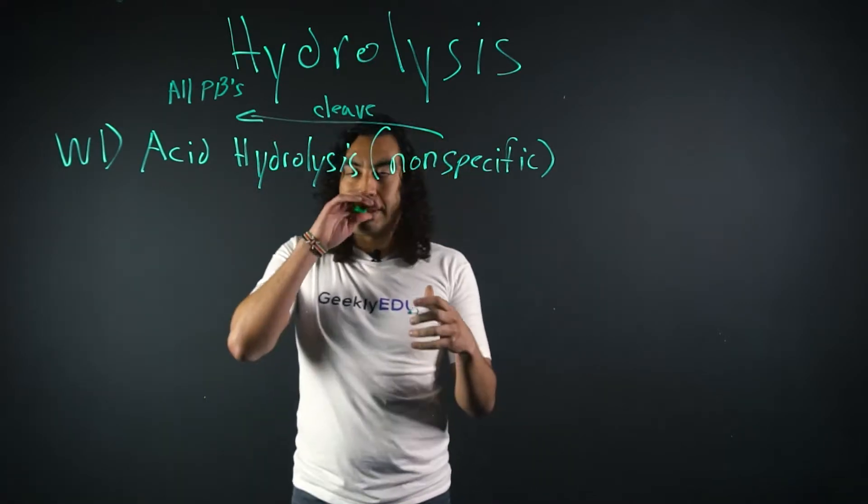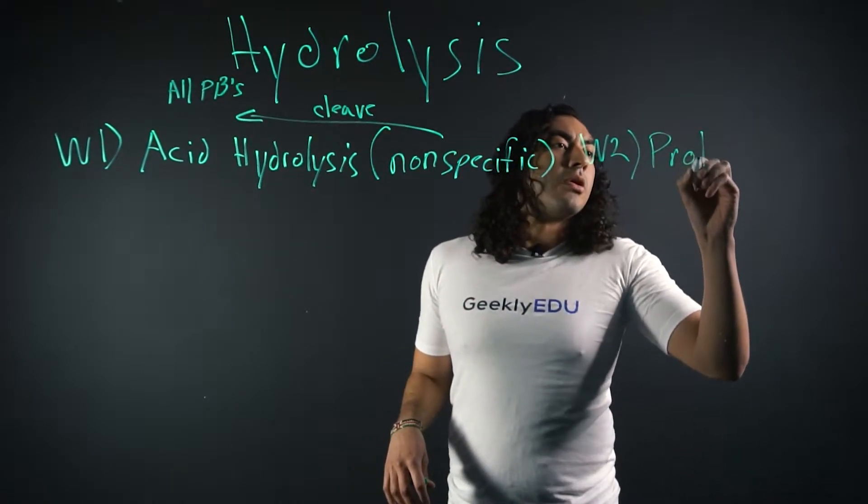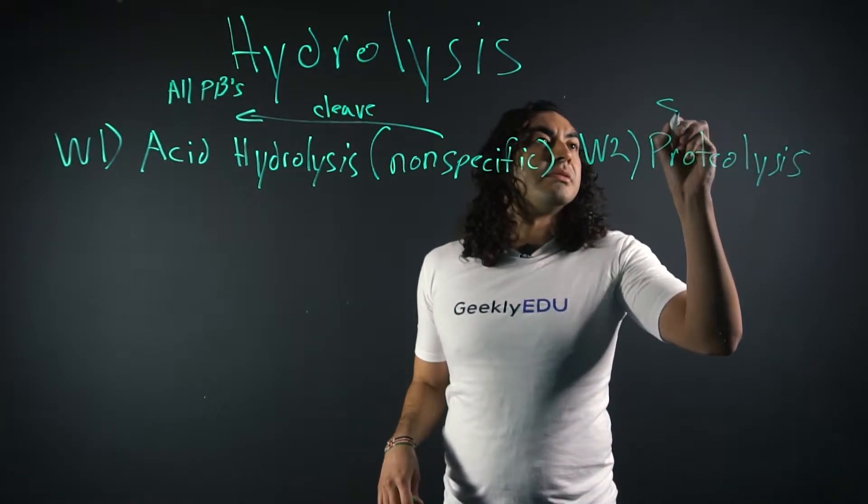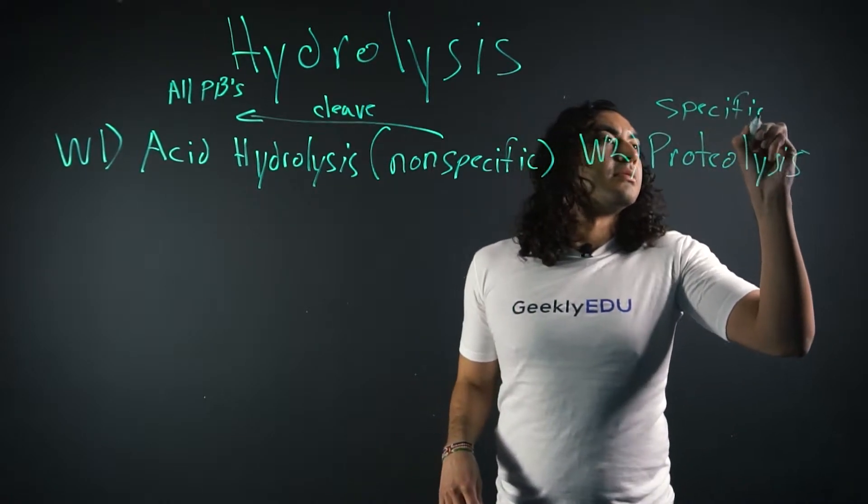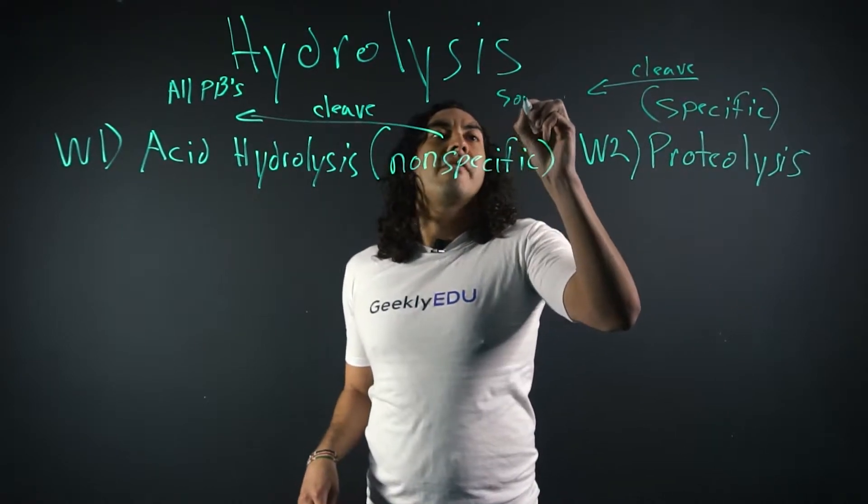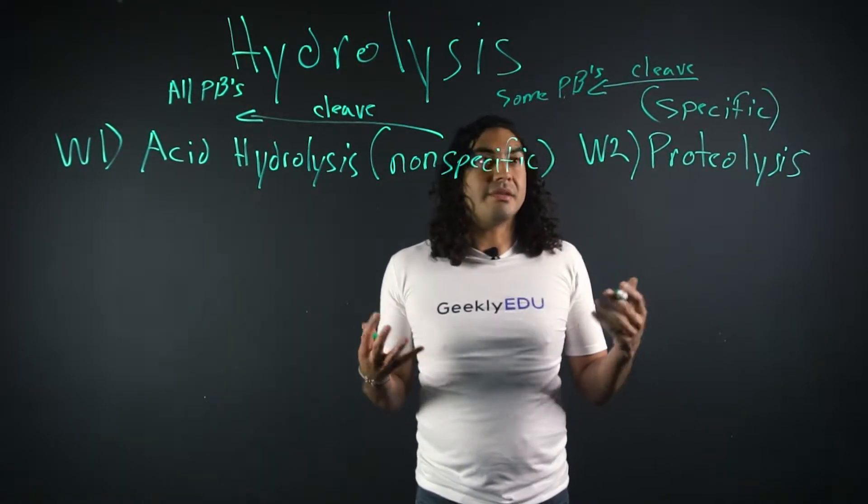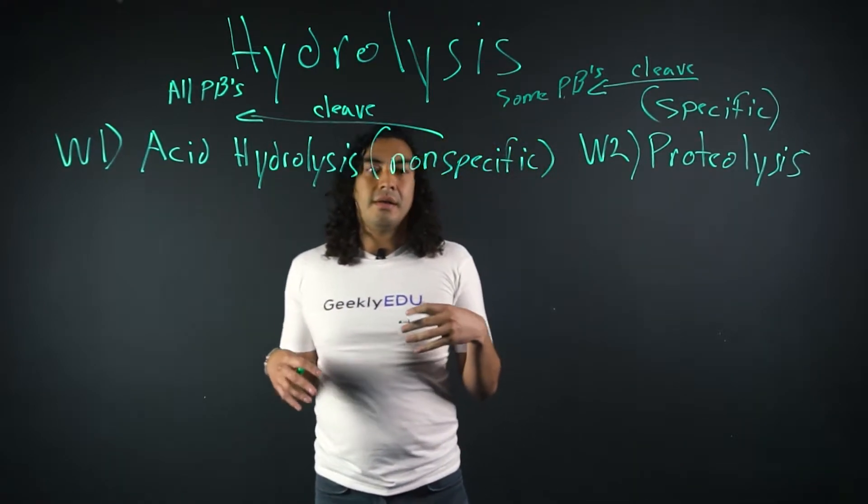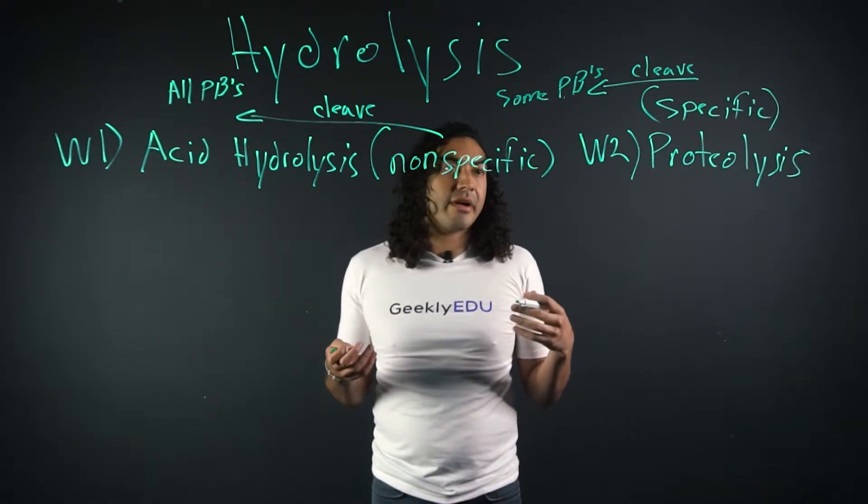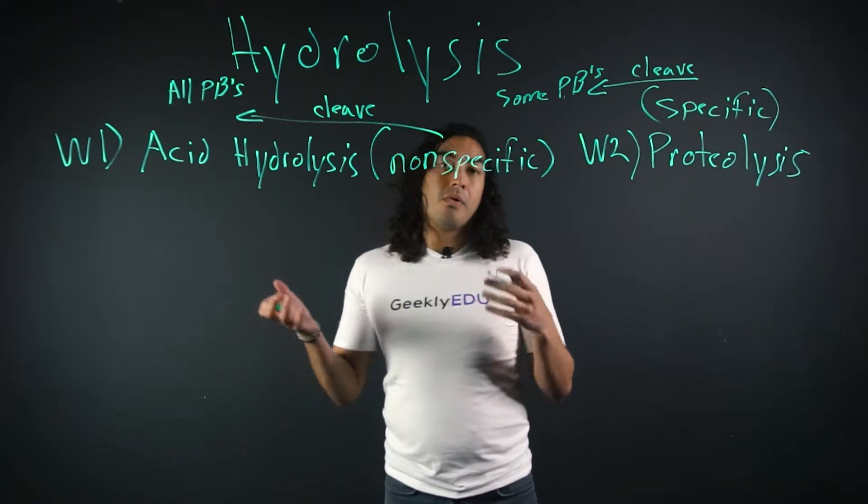So way number two of hydrolysis is going to be called proteolysis. And proteolysis is specific. And what that means is it's going to cleave only some of our peptide bonds. So it's going to be pretty exclusive on what peptide bonds it wants to break. And it's all going to be dependent on what proteolytic enzyme you choose. And it's also going to be specific on how your amino acids are arranged and things of that nature, whether your amino acid peptide bond is on the N-terminal or the C-terminal.